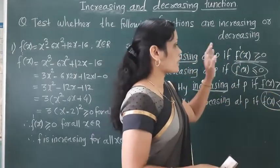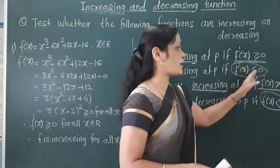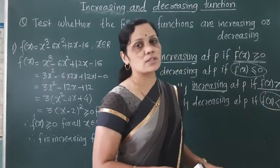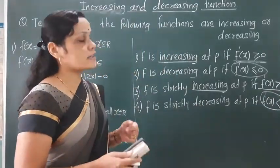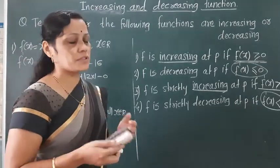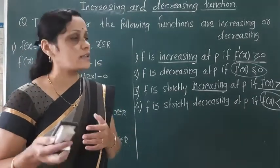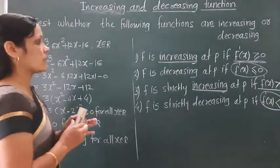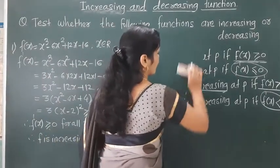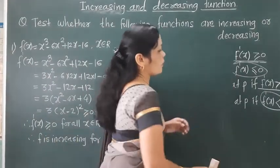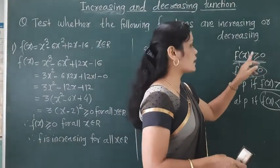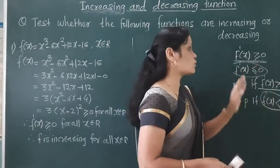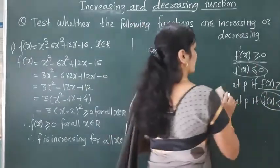Decreasing means: if F'(x) is less than or equal to 0, and if it is strictly less than 0, then the function is decreasing. To test a function, we first differentiate it, then check whether F'(x) is greater than or equal to 0, or less than or equal to 0, or strictly greater than 0, or strictly less than 0, to determine if the function is increasing or decreasing.